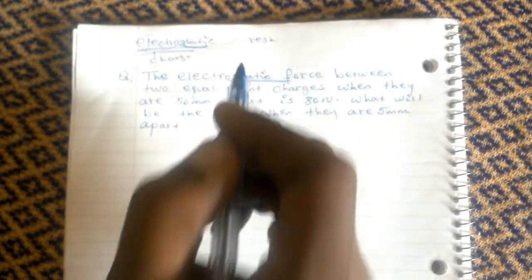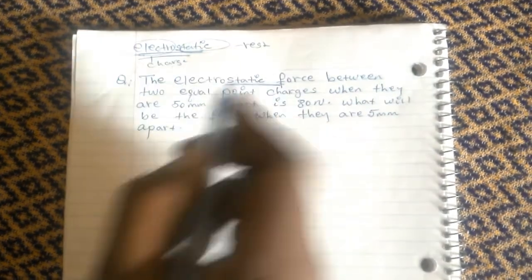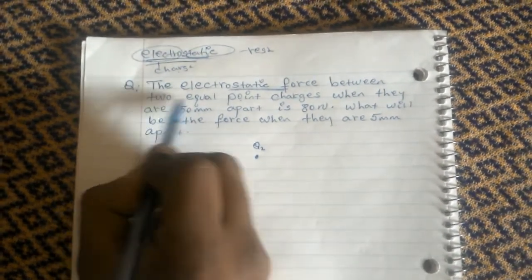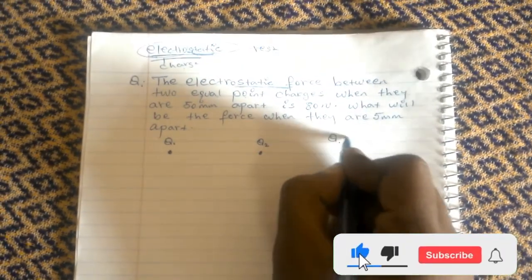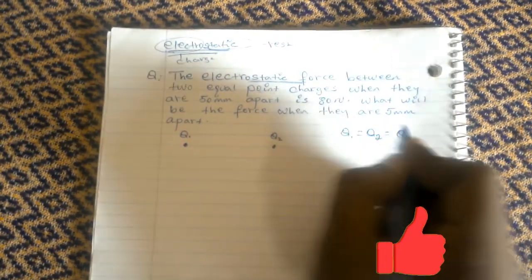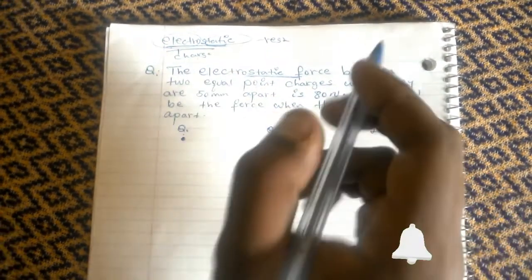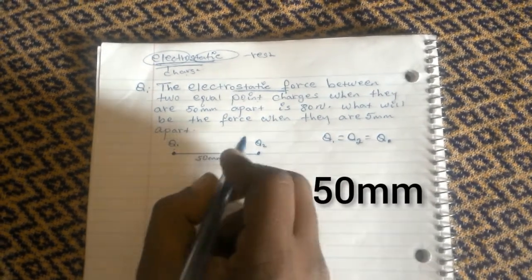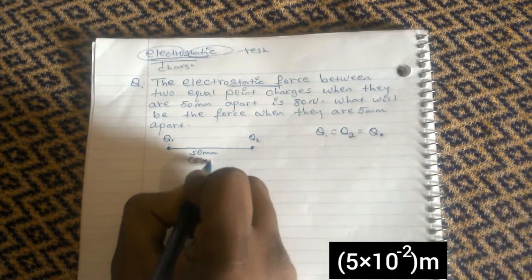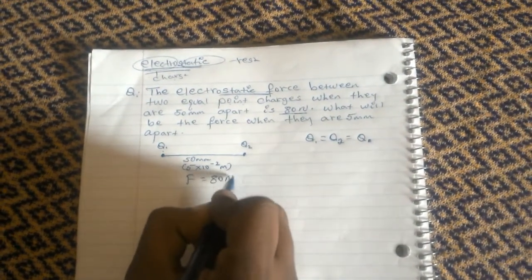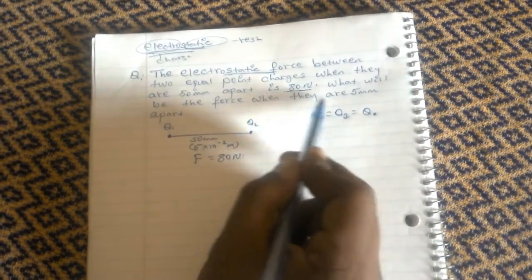The question says that the electrostatic force between two equal point charges — this is Q1 and this is Q2 — two equal point charges, meaning Q1 equals Q2. When they are 50 millimeters apart, we can write that as 5 times 10 raised to minus 2 meters.